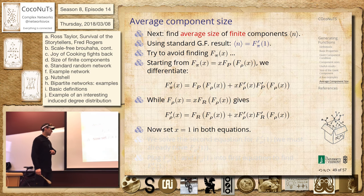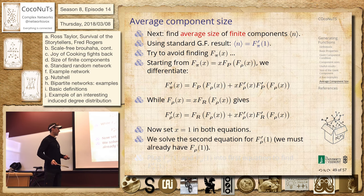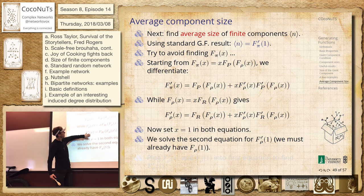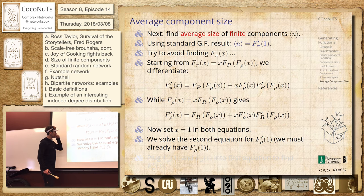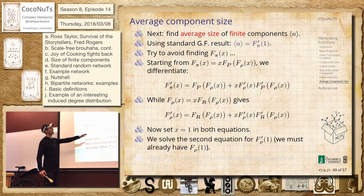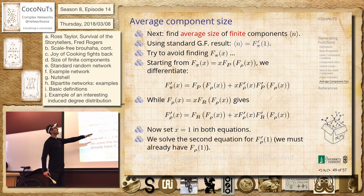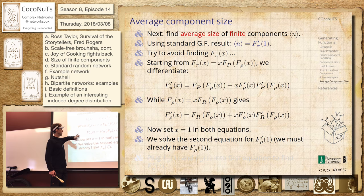So now we can set x equal to 1 in both of these, and then we'll just have a—we can solve this for this quantity. The first derivative of this gives you the average component size that you reach along a random edge, finite component size, providing you hit a finite component. What is this average size? Now it's built into it.